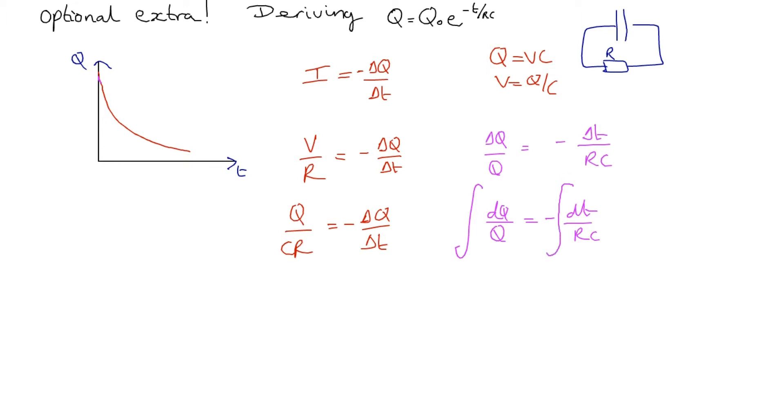Let's see what happens if we integrate from time zero to time T, starting with Q₀, the charge at time equals zero, and going to the charge at time T.